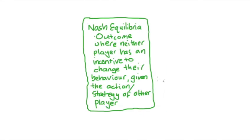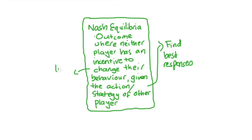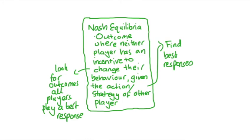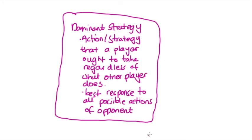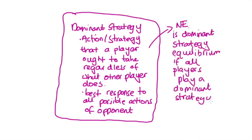So just to recap: a Nash equilibrium is an outcome where no player has an incentive to change their behavior given what the other player is doing. We can find Nash equilibria by finding best responses and looking for outcomes where all players are playing best responses to one another — those are the outcomes with two underlines in one cell. Dominant strategies are actions that a player should take regardless of what the other player does — strategies that are best responses to every possible action of a player's opponent. A dominant strategy equilibrium is a Nash equilibrium that is also the intersection of players' dominant strategies.